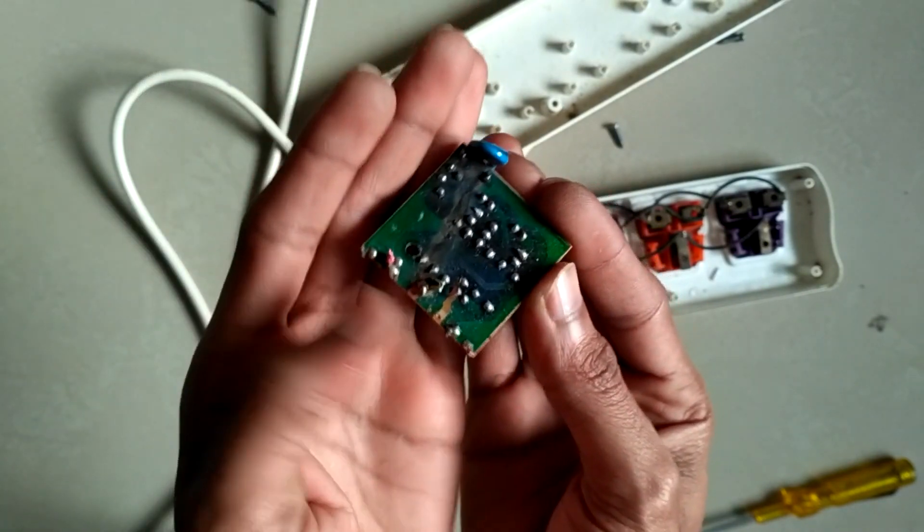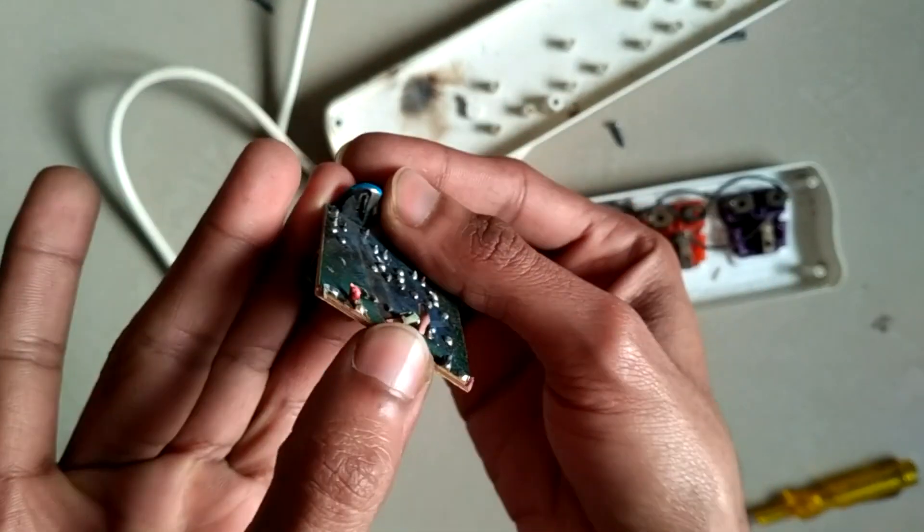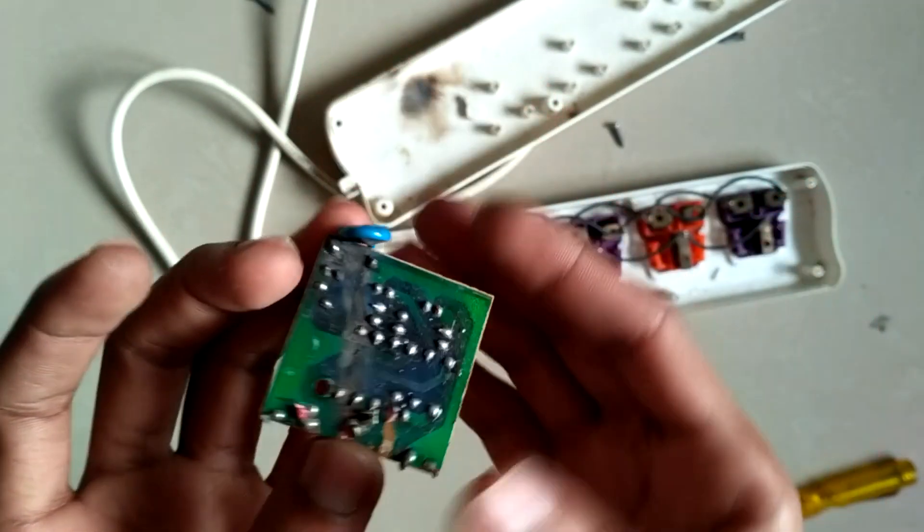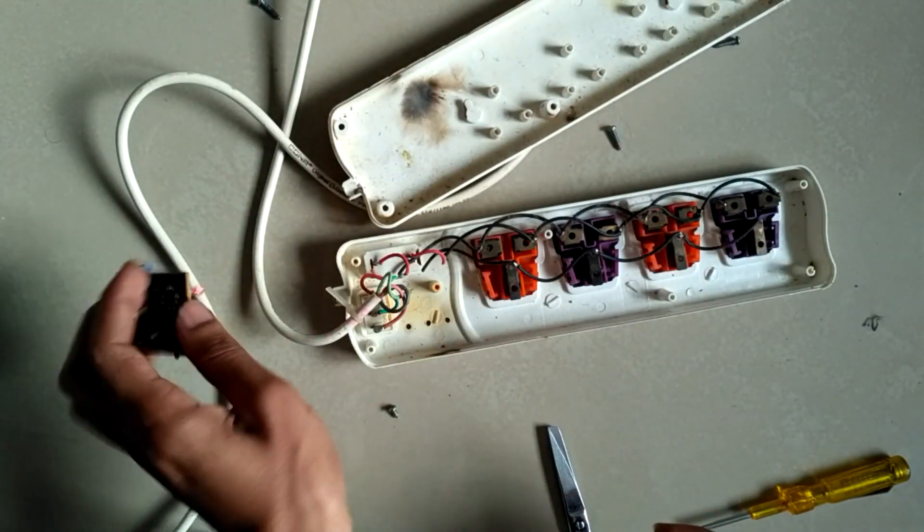This happens because if we use high voltage high amperes devices like iron box washing machine on this 6 amperes power strip.